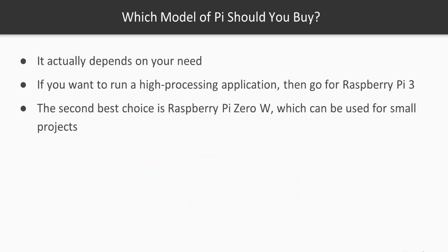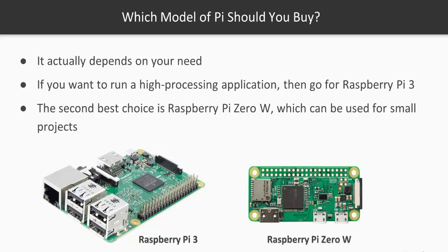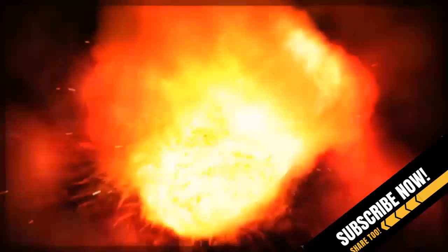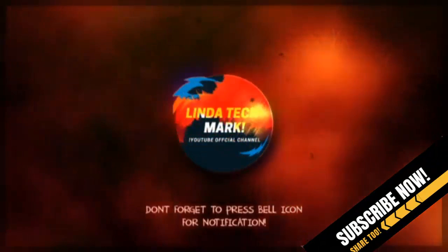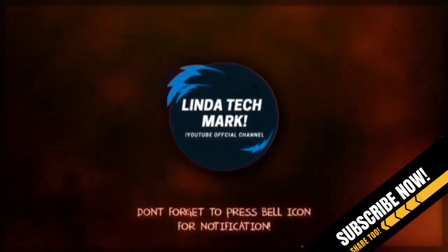The question is: which model of Pi should you buy? It actually depends on your need. If you want to run high processing applications like LibreOffice, Minecraft, or Kali Linux, then simply go for the Raspberry Pi 3. Otherwise, the second best choice is Raspberry Pi 0W, which can be used for low processing applications.